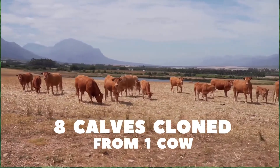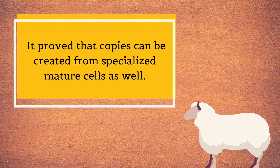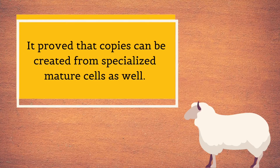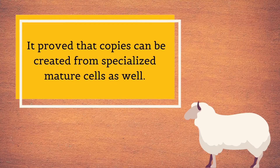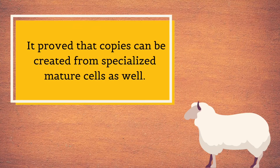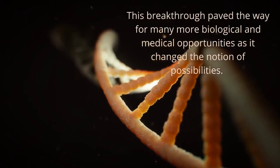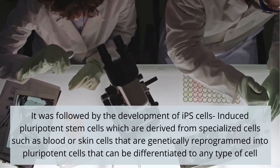In addition to sheep and cattle, other mammals that have been cloned include horse, rabbit, deer, ox, cat, rat, dog, and mule. Dolly was not the first mammal to be cloned, but it was special because it was developed from specialized adult cells, proving that copies can be created from specialized mature cells as well. This breakthrough paved the way for many biological and medical opportunities, changing the notion of possibilities.